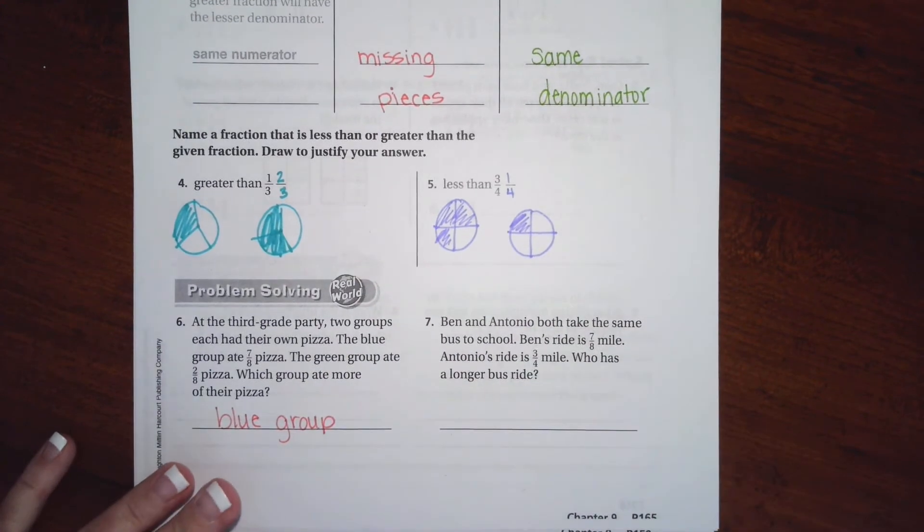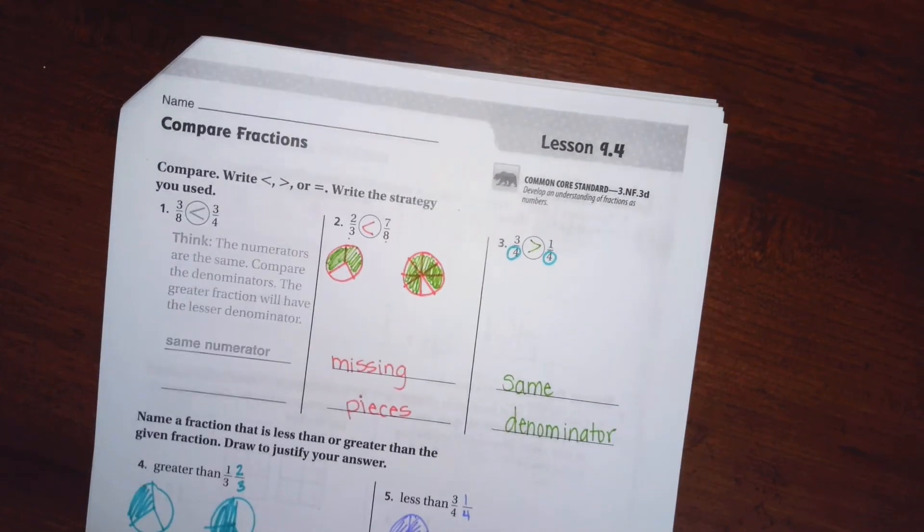I'm going to let you guys do number seven on your own because you're geniuses. We're going to go over onto the back where you guys are going to do the lesson check just like always.